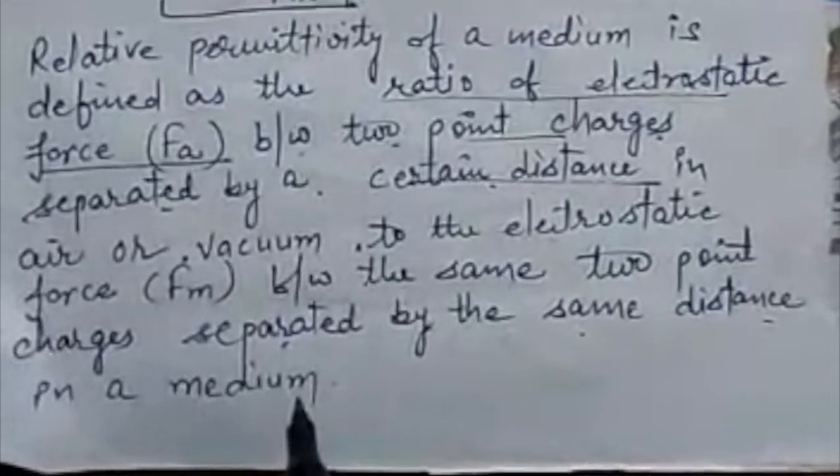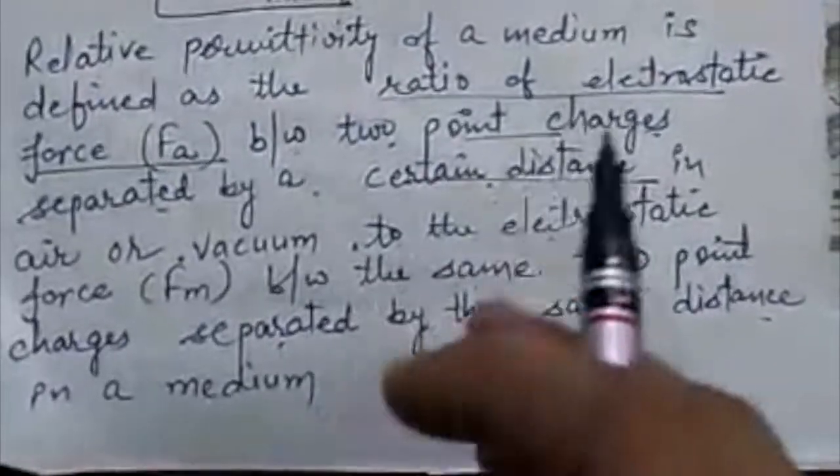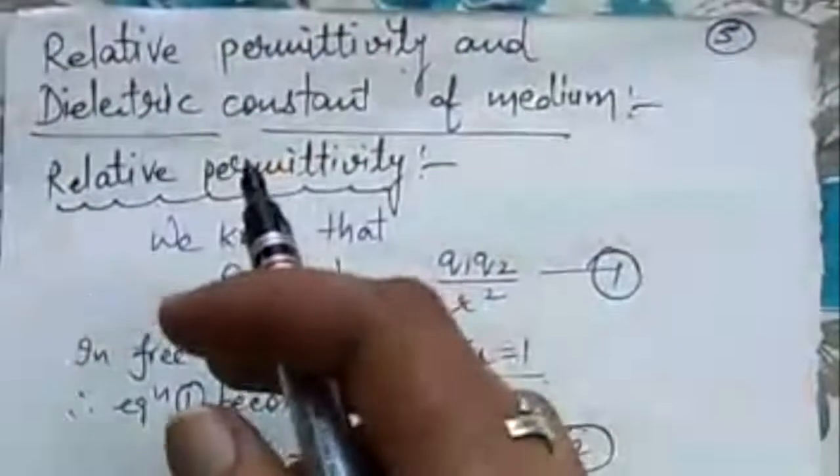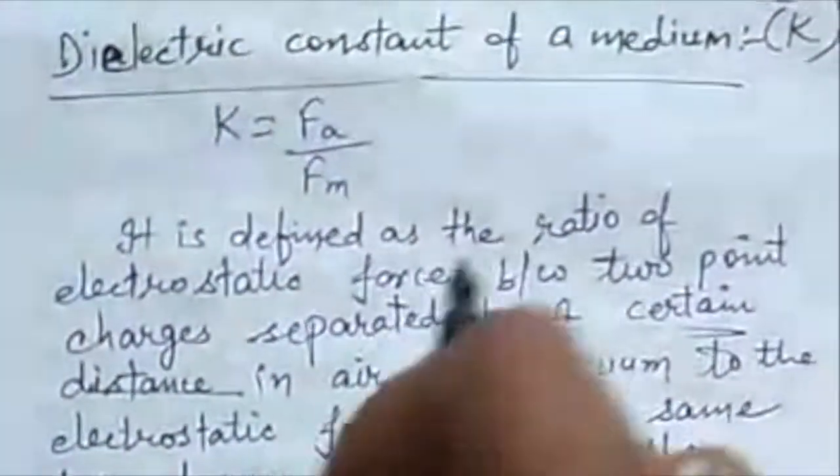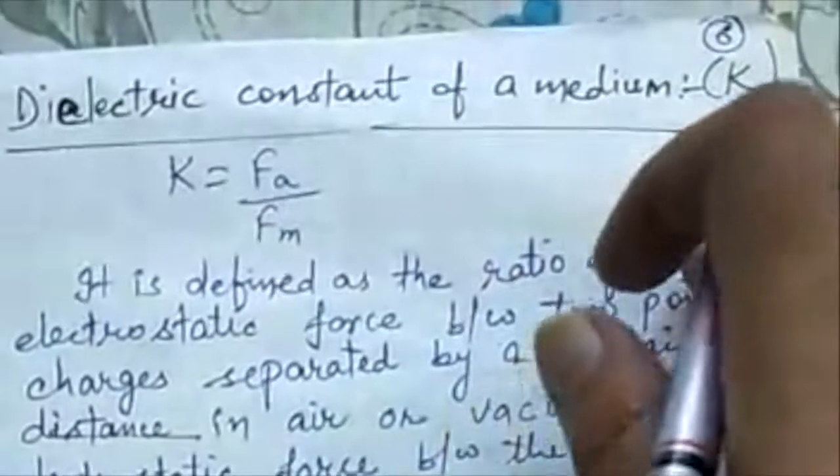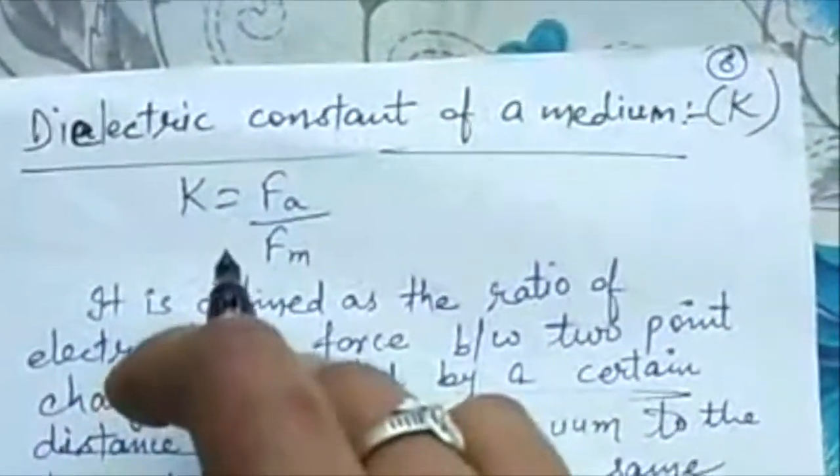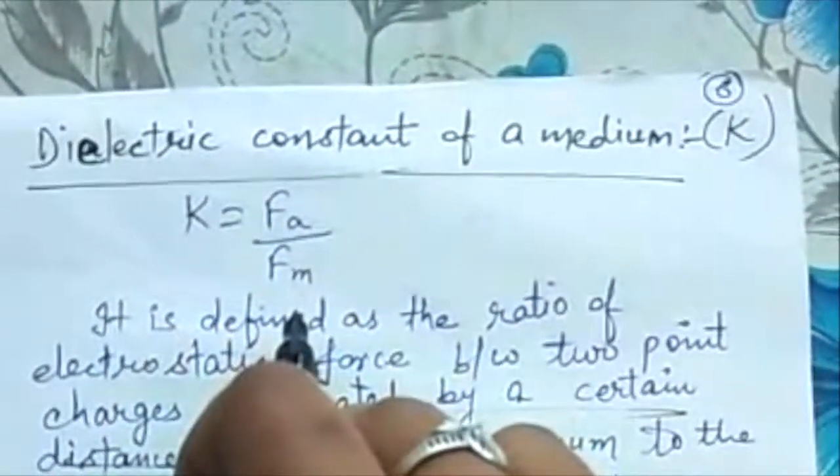Now we will define the dielectric constant of medium. Its symbol is capital K, the dielectric constant, and that is the same: Fa upon Fm. The definition remains the same but with a little bit of change.